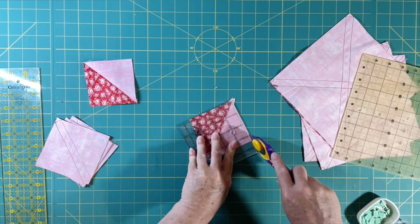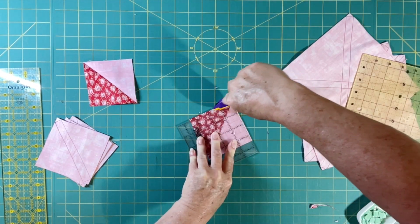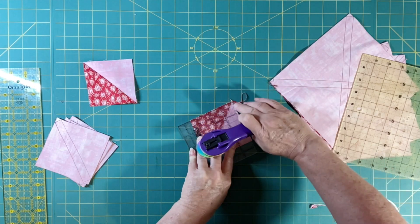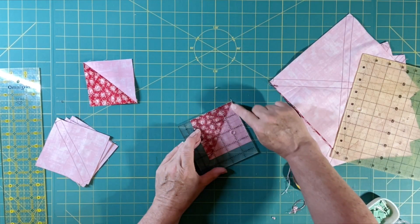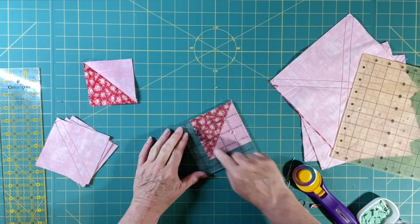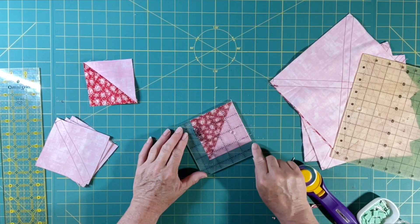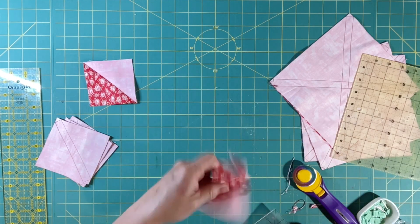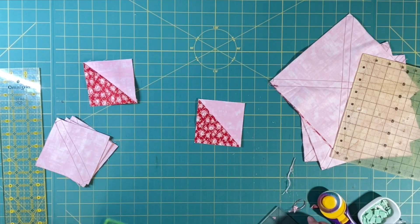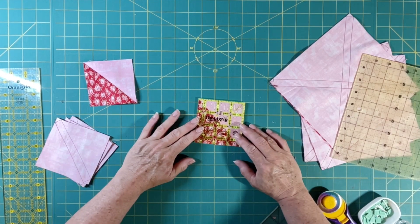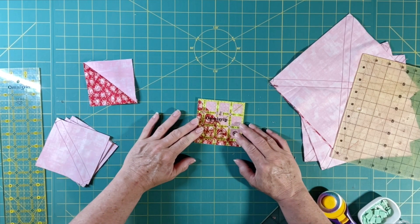So you can see that I have a little bit to trim off on my other two sides now. So the main thing to remember is this line right here and make sure that you're leaving a little bit of waste all the way around. And then once you've cut all that waste away you should have an exact three and a half inch square.